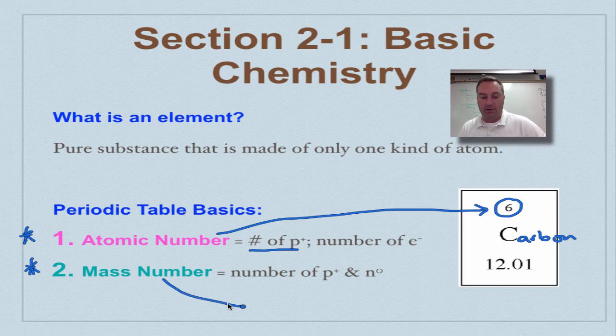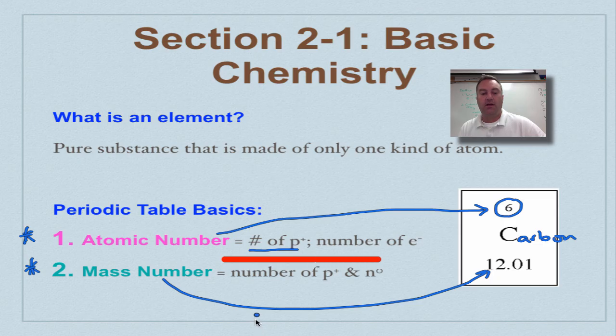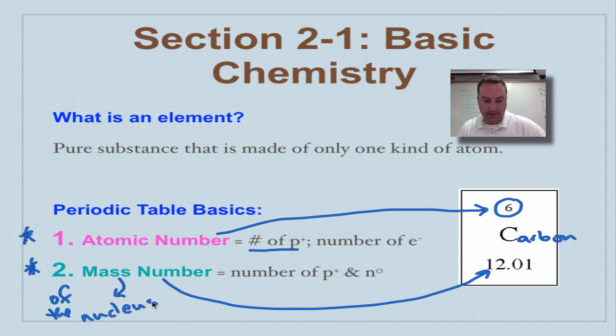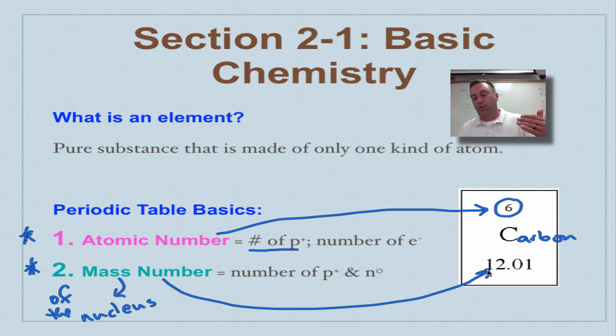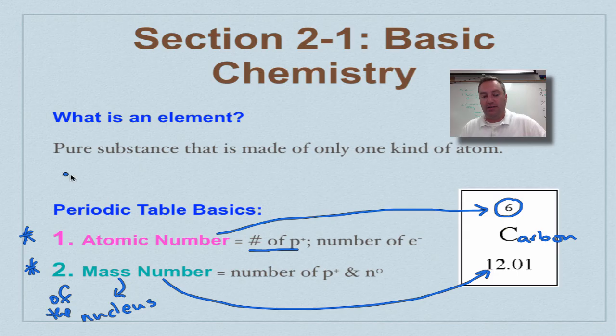Now the mass number, which is this larger number down here, this is the number of protons and neutrons. So this is going to be pretty much the mass of the nucleus. These are the two most important things. Now you see this .01 in here? They're taking into account the isotope. So it's sort of an average weight for the, but it's a weighted average for the nucleus. So we're just going to kind of round up. So we have 12 protons and neutrons inside the nucleus, and we have an atomic number of six.